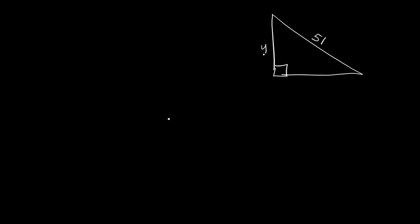Let's start. We have the triangle here, with 90 degrees here and the hypotenuse is 51. Let's say from here to here is y, and from here to here is x. Now let's label the vertices a, b, and c.